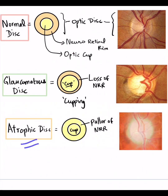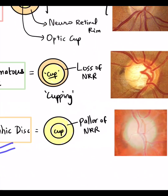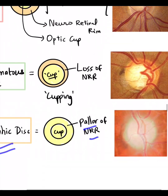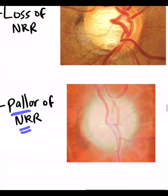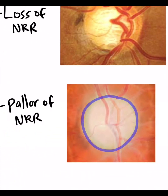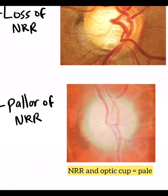In an atrophic disc, there is going to be pallor of the neuroretinal rim. Contrary to the loss in glaucoma, there is going to be paleness of the neuroretinal rim. As you can see in this picture, you can't demarcate between the optic cup and the neuroretinal rim — everything looks pale.